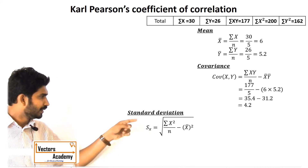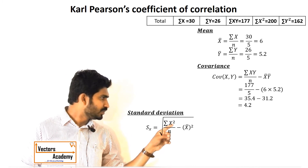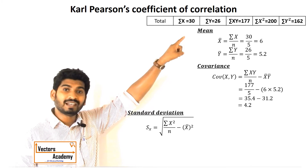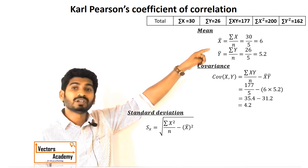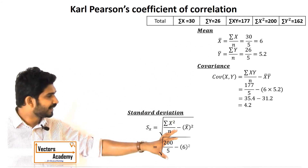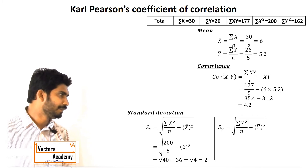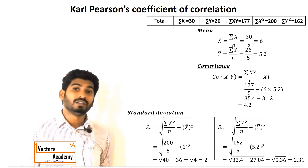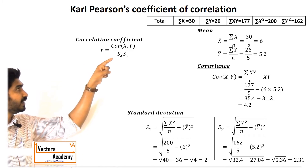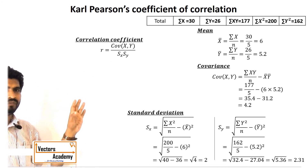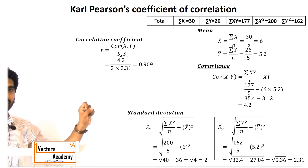The standard deviation of x, written as S subscript x, is given by the square root of: summation of x squared divided by n, minus x-bar squared. We substitute the already-calculated values to get the standard deviation of x as 2, and similarly calculate the standard deviation of y. The correlation coefficient r equals covariance divided by the product of the standard deviation of x and the standard deviation of y. We substitute all the values into this formula to get r.